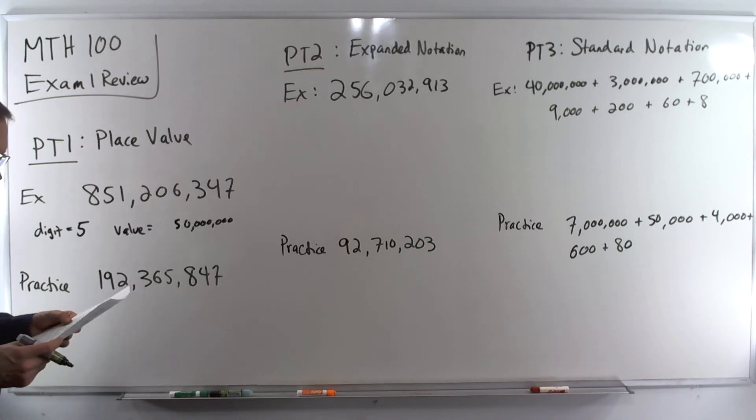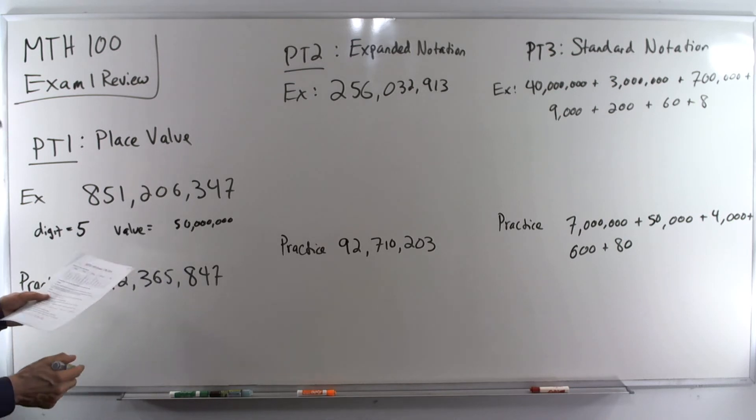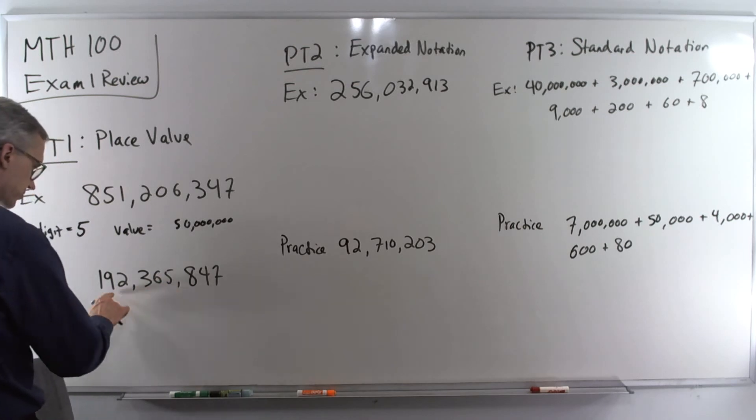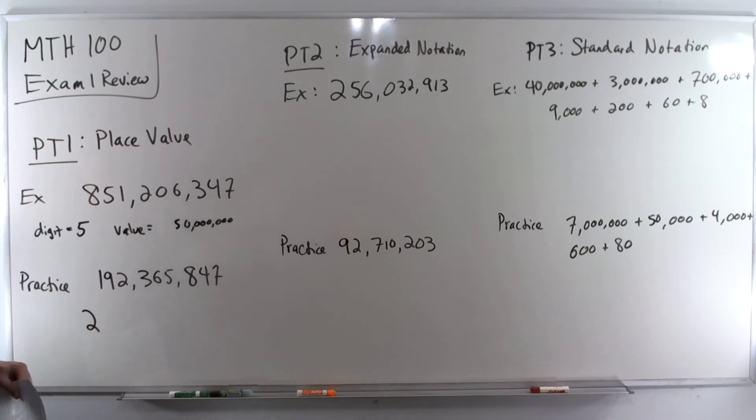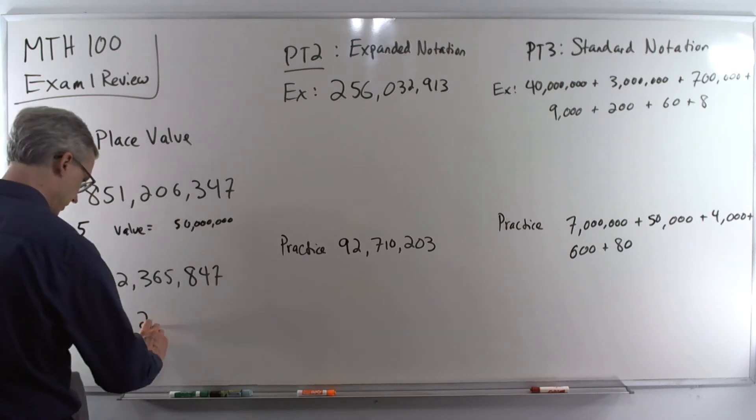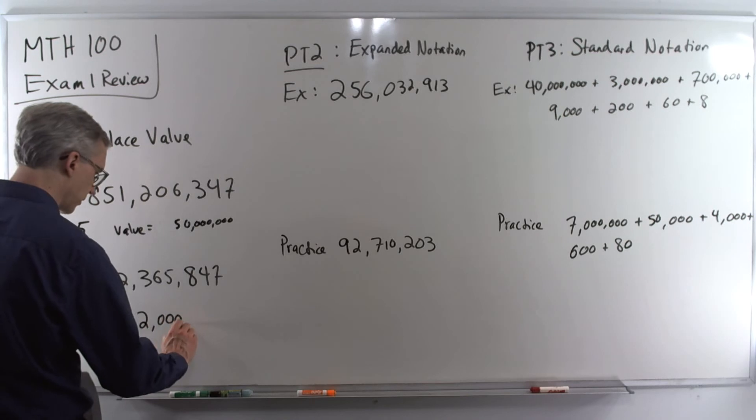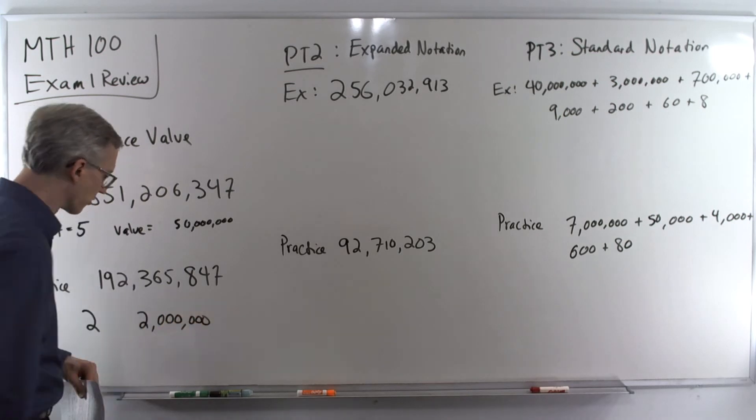Practice. How many millions are there in this number, 193,365,847, and what is the value of this digit? Now just a reminder I'm not stopping the video so you should pause, work on it, and restart the video. So millions. Here's the millions group. The single millions are the one to the right. So that digit is 3. So there are three millions. And the value of that is three times one million or three million.